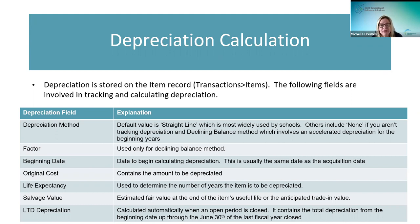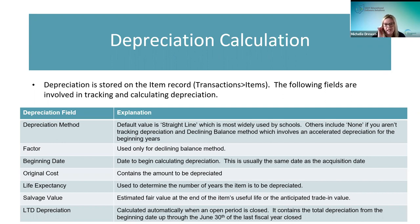The life-to-date depreciation field is automatically calculated when an open period is closed. If you don't make any adjustments or manually recalculate, it will be taken care of automatically when you close a period. It contains the total depreciation from the beginning depreciation date up through the last period closed — June 30th.